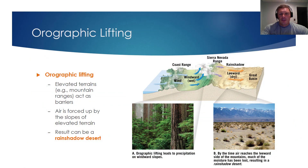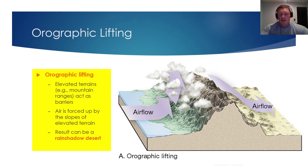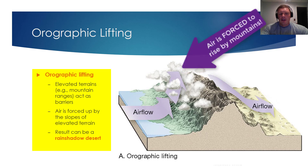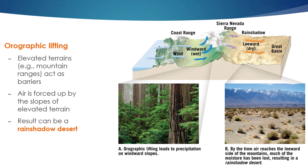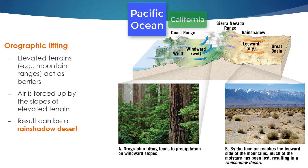The first process for lifting air that I'd like to overview is orographic lifting. Orographic lifting occurs when elevated terrains like mountain ranges act as barriers to air. Let's revisit a picture we looked at in a previous VODCAST. To the left of this image, you see the Pacific Ocean, then California, then the Sierra Nevada mountain range, and on the other side of the Sierra Nevadas is the Great Basin Desert.